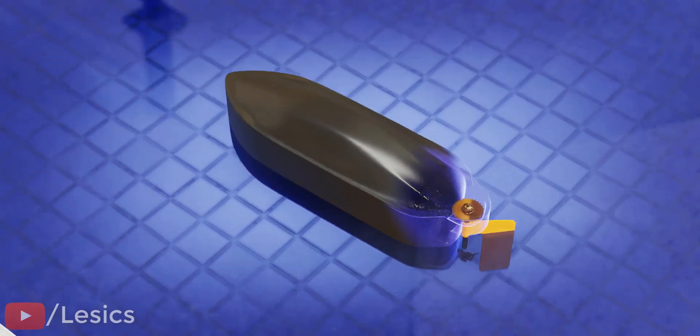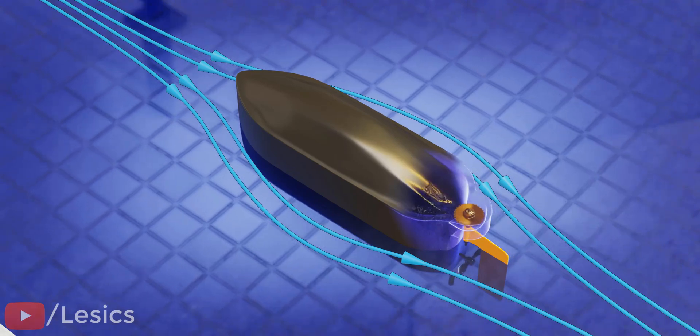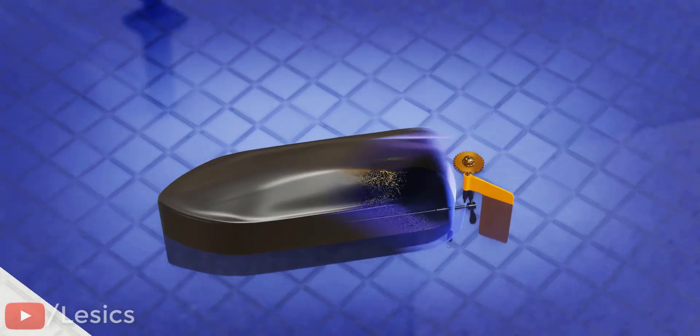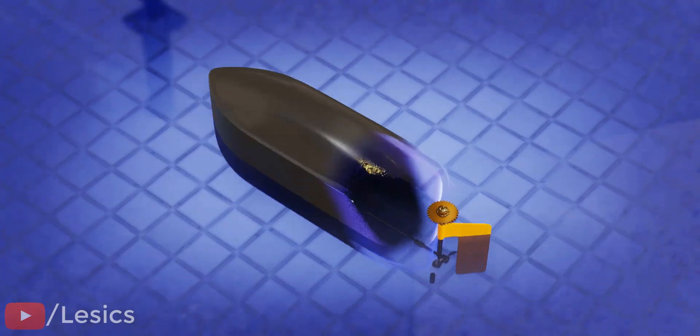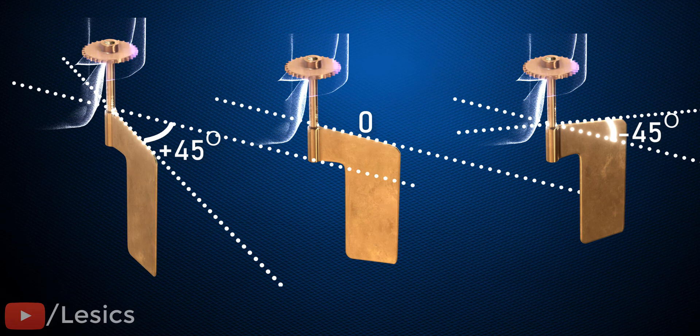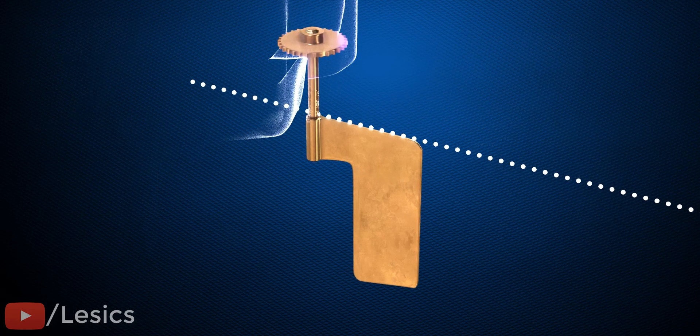Tesla was able to achieve three different angles for his boat's rudder: zero degrees, plus 45 degrees, and minus 45 degrees. The rudder didn't have any other angles in between. How did he achieve these three distinct angles using a mechanism?